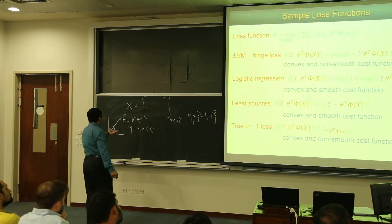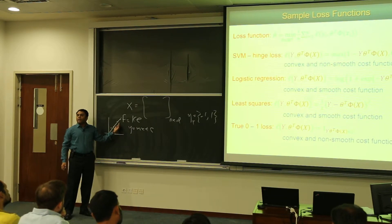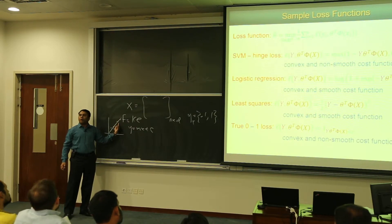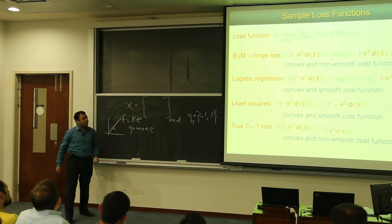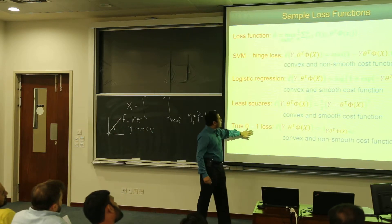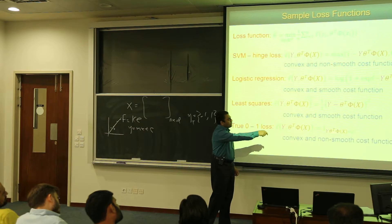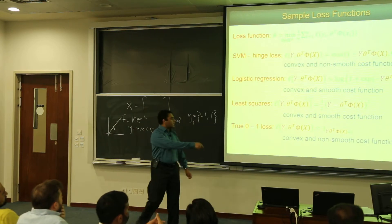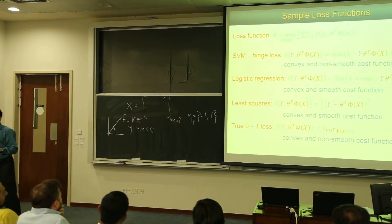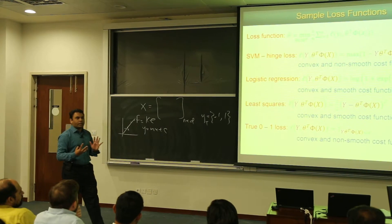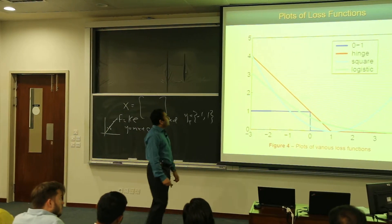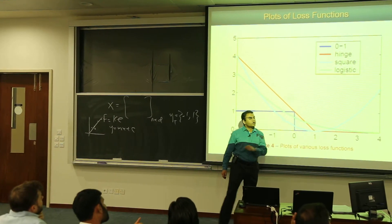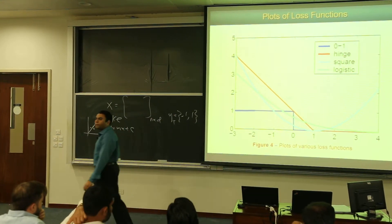Then we have least squares, which we all know — it's what we were doing in physics lab experiments when drawing the line of best fit, minimizing the least square error. For classification, there's also the 0-1 loss: if the expression is less than 0 it gives 1, if positive it gives 0. That is convex but non-smooth. So depending upon the task there are associated loss functions, and there are different losses assigned to regression versus classification.